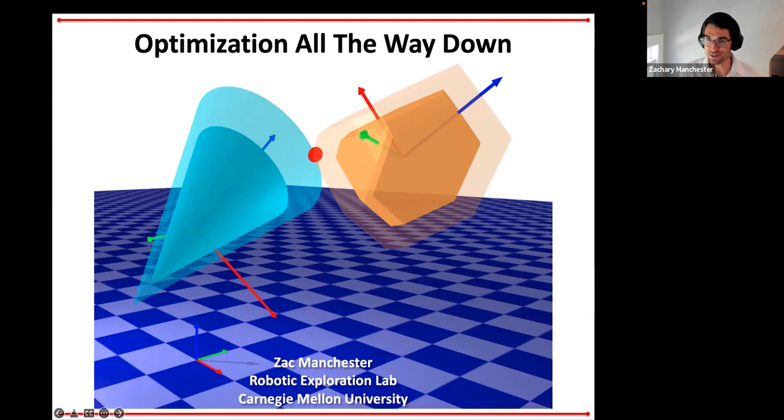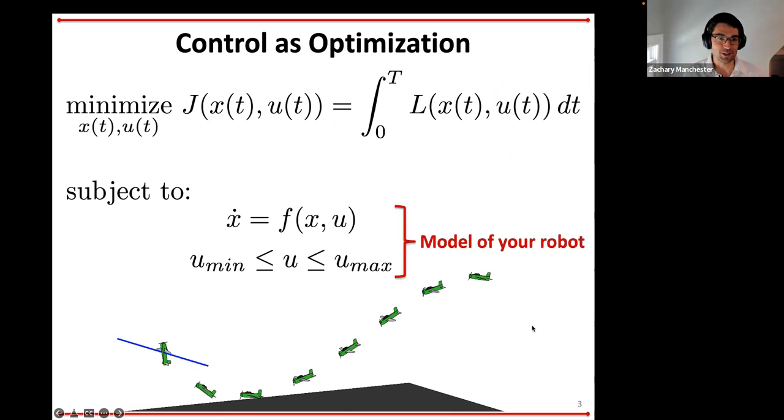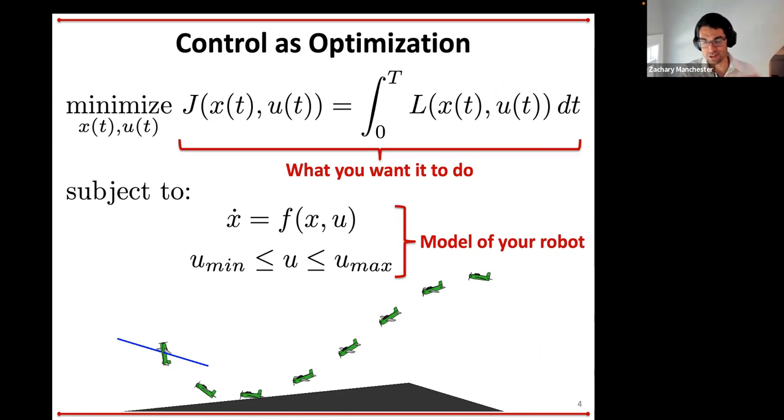I'm going to go through examples of pieces of the puzzle that are individually expressible as optimization problems. The first, which should not be controversial, is control can be posed as optimization. I've written this nice trajectory optimization problem because I'm a biased model-based control guy. We have a model of your robot, x dot equals f of x u, maybe some control limits, and a cost function saying what you want it to do. But this mental picture of control as optimization is much broader—it encompasses modern reinforcement learning, anything where you're minimizing some loss function, maximizing reward for an agent. All of them fall under this broad, open-minded perspective.